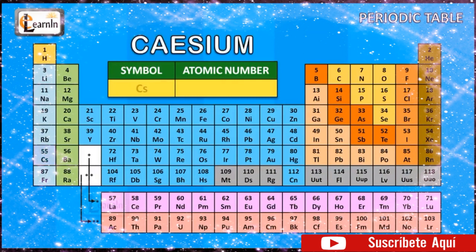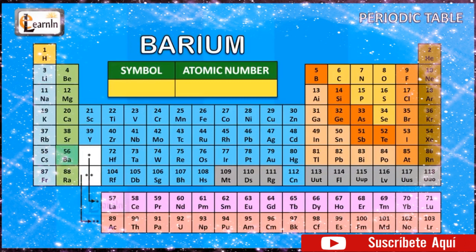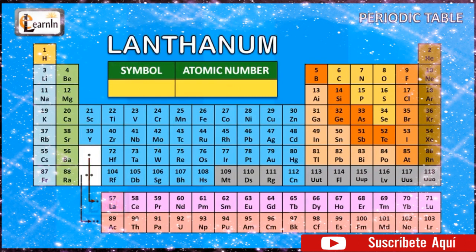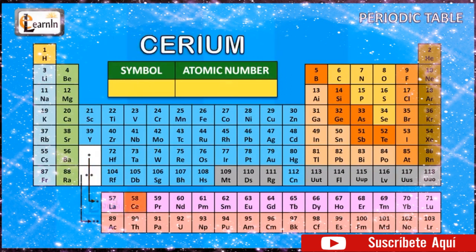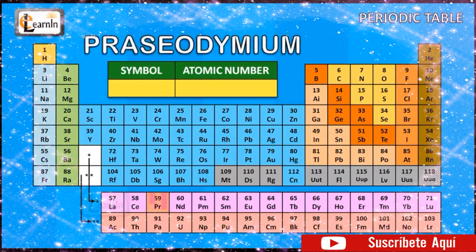The element cesium is represented as Cs and has an atomic number of 55. The element barium is represented as Ba and has an atomic number of 56. The element lanthanum is represented as La and has an atomic number of 57. The element cerium is represented as Ce and has an atomic number of 58. The element praseodymium is represented as Pr and has an atomic number of 59.